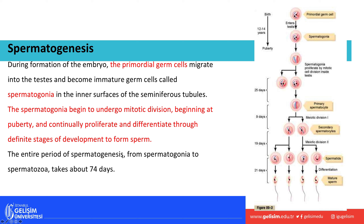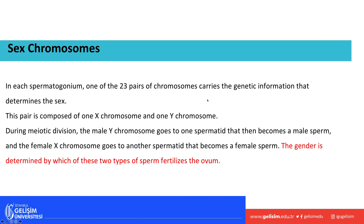The entire process of spermatogenesis, from spermatogonia to a mature spermatozoon, takes about 74 days. Each spermatogonium carries one of the 23 pairs of chromosomes that determines sex. The last pair is made up of either an X or a Y chromosome — XY is a biological male, XX is a biological female.